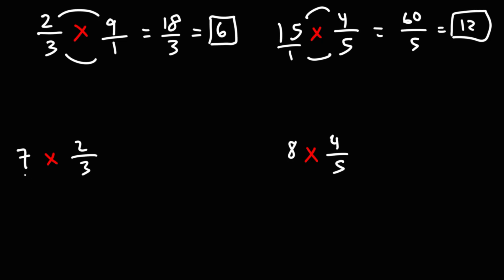Let's do the same for the third example. Let's put 7 over 1 and multiply across. 7 times 2 is 14. 1 times 3 is 3. So the answer as an improper fraction is 14 over 3.